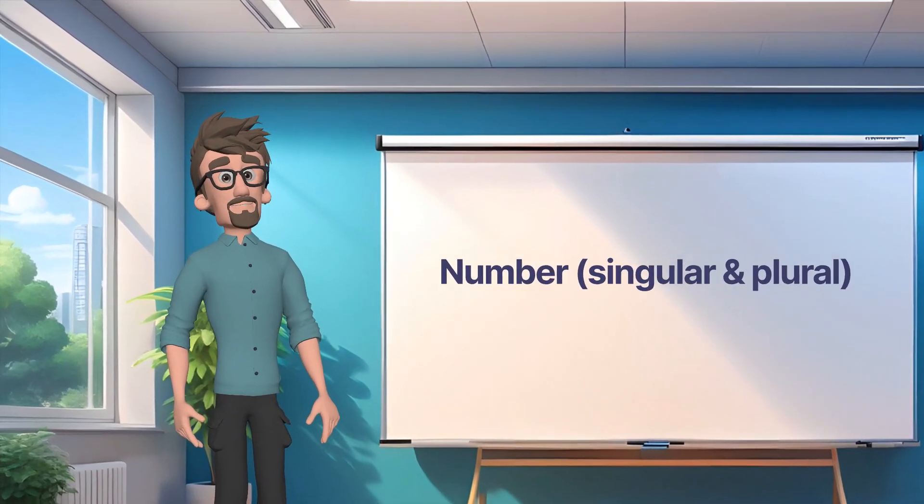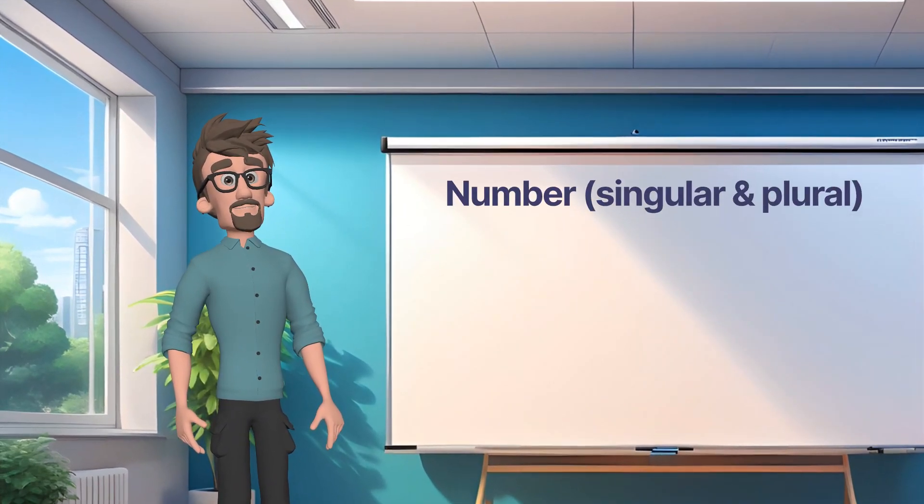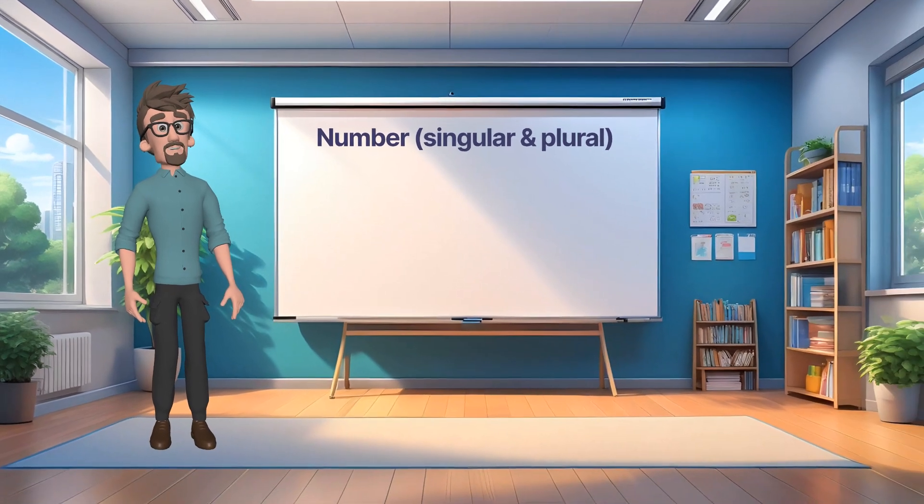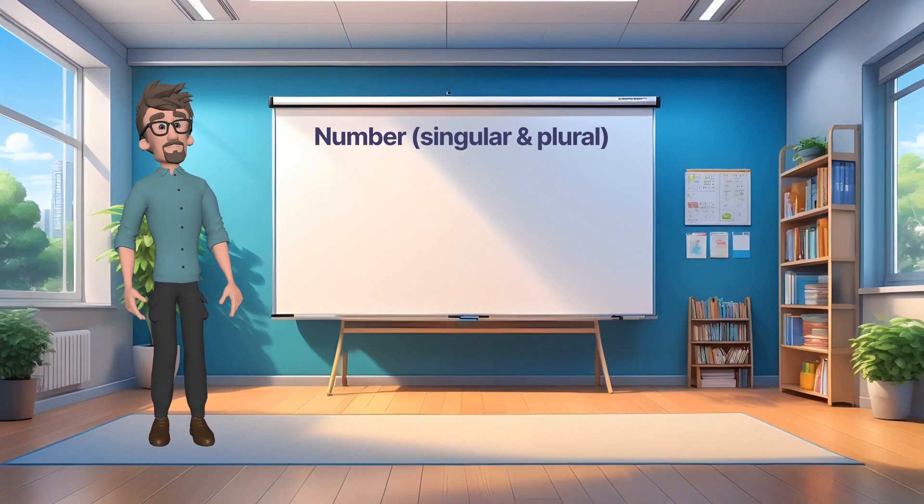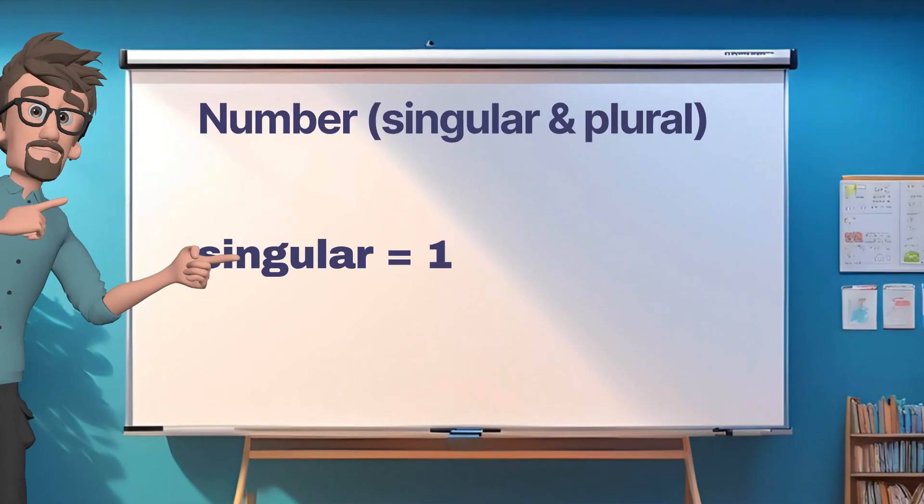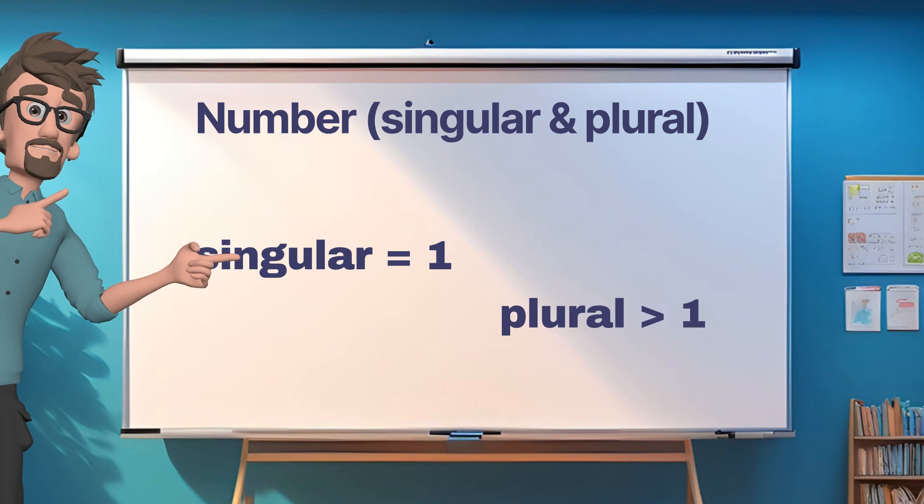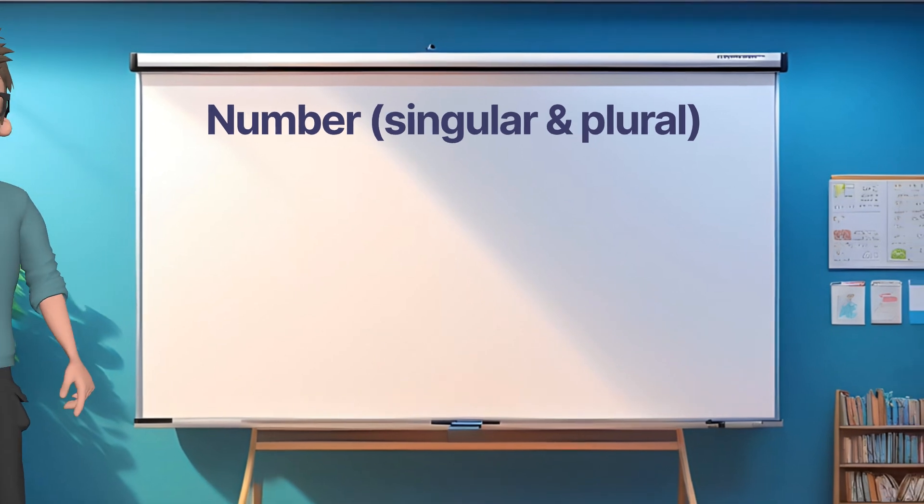To keep things simple, it's a grammatical term, a classification of words depending on how many people or things are referred to. Basically, between one, meaning singular, and more than one, meaning plural. That's that.